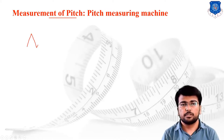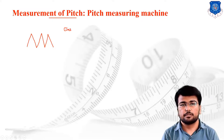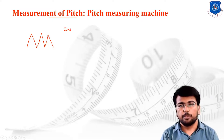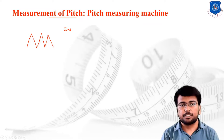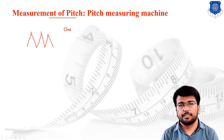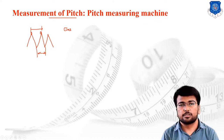Suppose this is your basic thread profile — here we have drawn external threading. Pitch is the linear distance between the two crests of the given thread profile. We can say that the linear distance between these two points is known as the pitch. Pitch is also known as the linear distance between the two roots of the given thread.